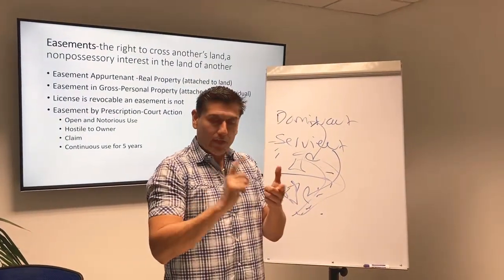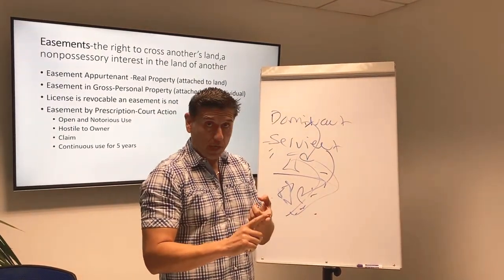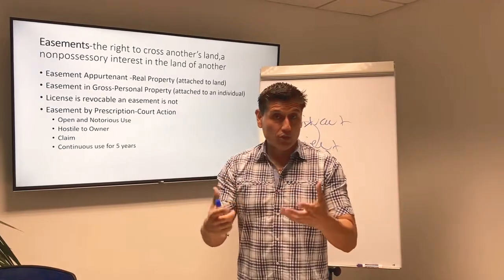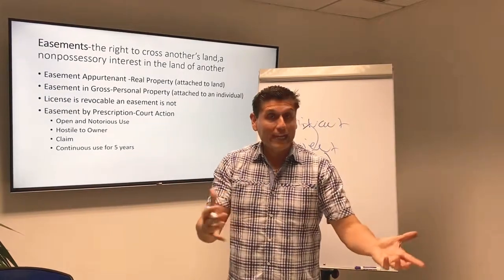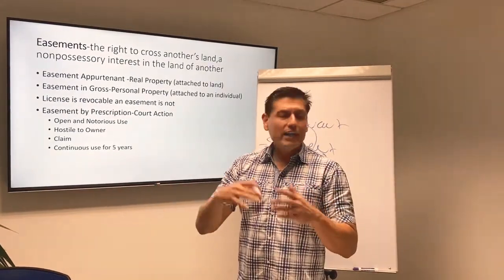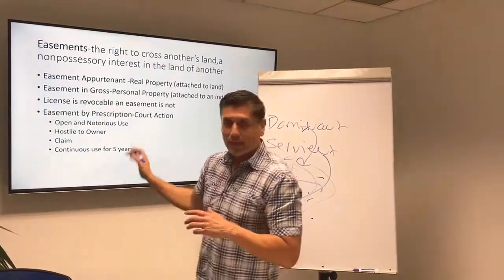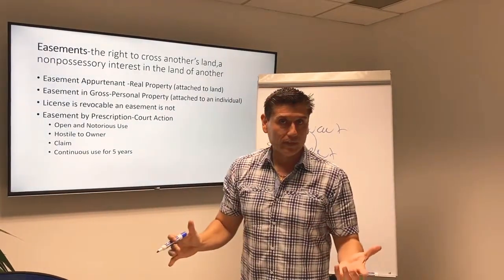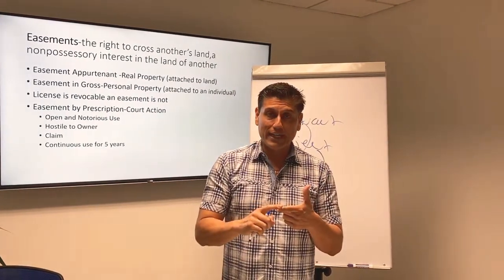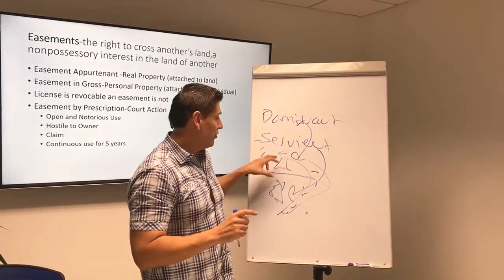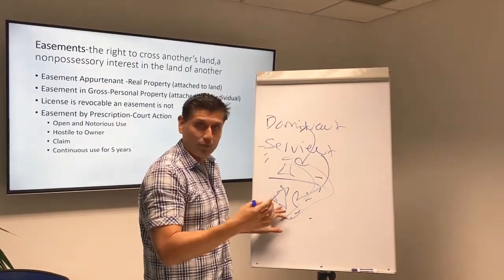Let's recap. We have easement appurtenant — real property. We have easement in gross — personal property. We have easement by prescription — you go to court to get it. One more thing: a license. If I say come over and watch the UFC fight night and then I say get out of here, I can revoke a license — I can invite you and revoke it. But an easement, once you have one, it's not revocable; it's a right that's not revocable. The dominant tenement benefits from the right to cross; the servient tenement has to allow it. I hope this cleared it up and I'll see you in class.